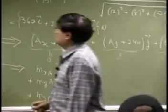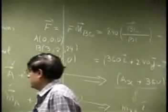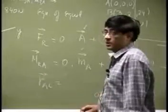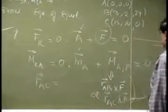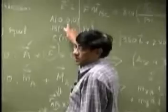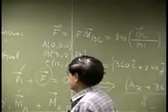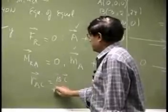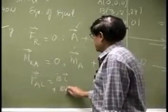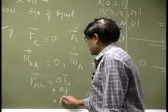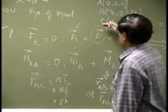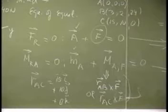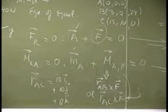then we need the vector R_AC. And we know that A is 0. So AC is going to be simply 15I plus J plus 0K. I mean, whatever you have here, that should become vector R_AC.